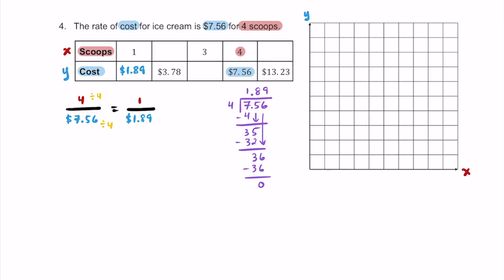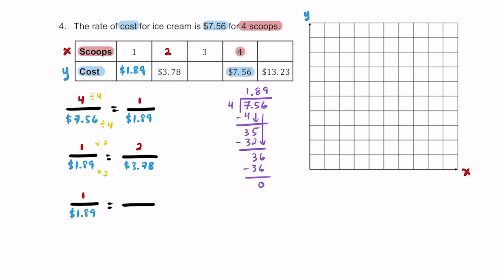We put $1.89 in the first box for one scoop. Now, how much ice cream can we buy with $3.78? Doubling $1.89 gives $3.78, so two scoops cost $3.78. For three scoops: multiply $1.89 by 3. 3 times 9 is 27, carry the 2. 3 times 8 is 24 plus 2 is 26, carry the 2. 3 times 1 is 3 plus 2 is 5. So three scoops cost $5.67.